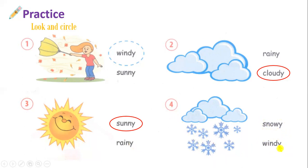Number four — snowy or windy. Snowy là tuyết rơi, còn windy là trời có gió. Ok, look at the picture number four. Chúng ta nhìn vào bức tranh số 4 và chúng ta nhìn thấy ở đây có những bông tuyết đang rơi. Vậy chúng ta sẽ lựa chọn đáp án là snowy. You will circle the correct answer: snowy.